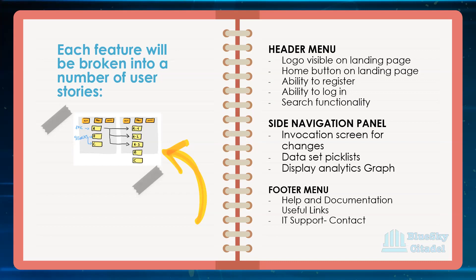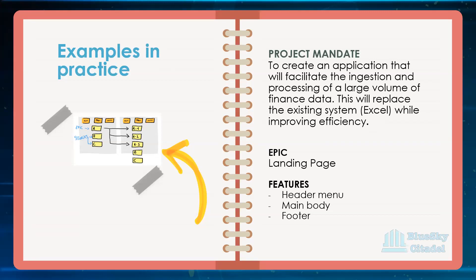The help and documentation — when you click on it, it takes you to where further information has been documented and where you can get help about the application. Useful links, when clicked, would be for relevant topics. IT support — if you're having any problems with the application, you can click on that or have the contact details. So the epic is the landing page. We know the landing page cannot be created in one sprint, so we've broken it down into the different aspects and then into user stories.